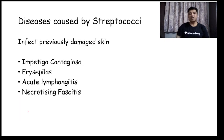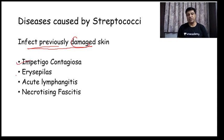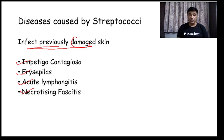The diseases caused by Streptococci: Streptococci need previously damaged skin to infect. The various diseases caused by Streptococci are Impetigo contagiosa, erysipelas, acute lymphangitis, and necrotizing fasciitis. Necrotizing fasciitis has multiple etiological agents — Streptococcus pyogenes is one of them, and Methicillin-resistant Staphylococcus aureus is also a cause.